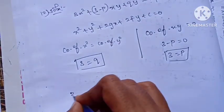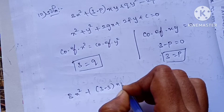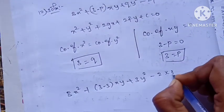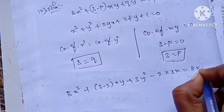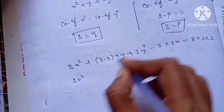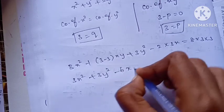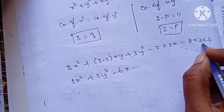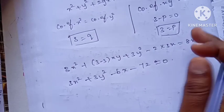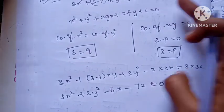Substituting p = 3 and q = 3 into the equation: 3x² + (3-3)xy + 3y² - 2(3)x = 8(3)(3). This simplifies to 3x² + 0 + 3y² - 6x = 72, which gives us 3x² + 3y² - 6x - 72 = 0.